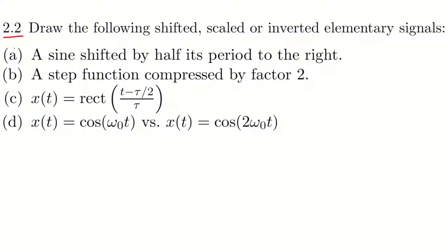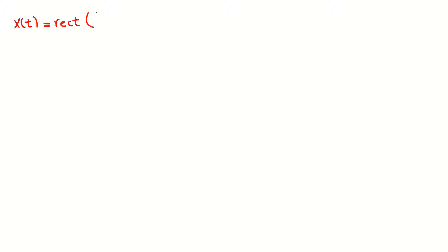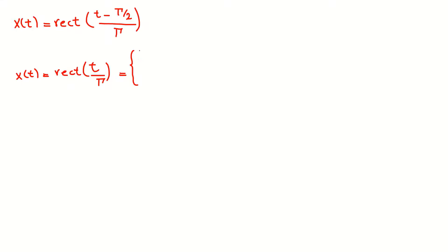This is question 2.2 which has four parts. I'll just solve this one because I think the rest — A, B, and D — are simple. We have a signal X(T) which is a rectangular signal, equal to rect of (T minus tau/2) divided by tau. The height of this signal is 1 if the absolute value of T is smaller than or equal to half of tau, otherwise it is 0.